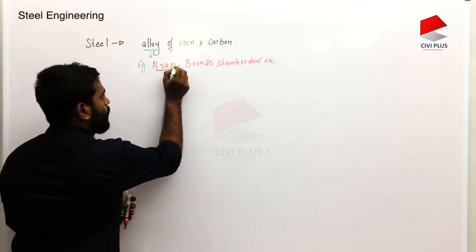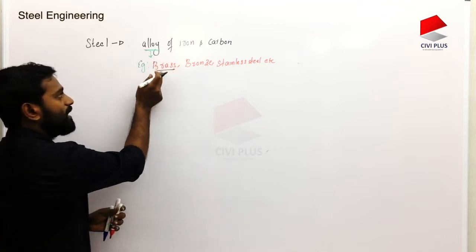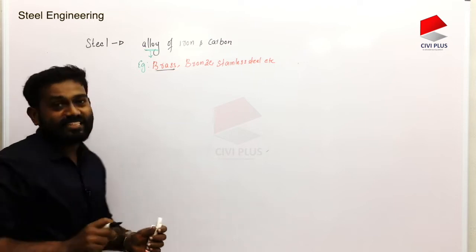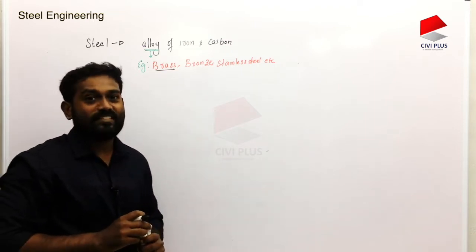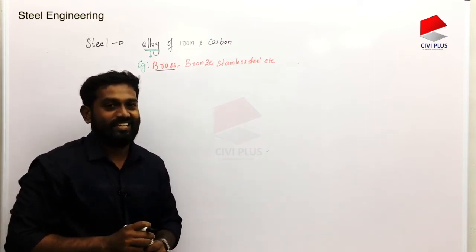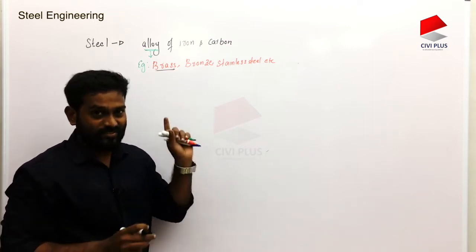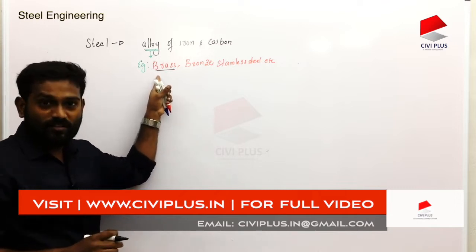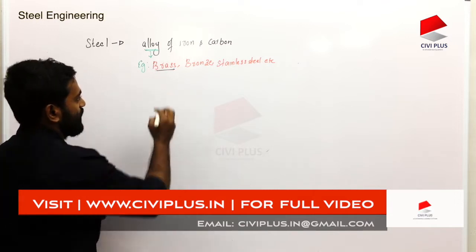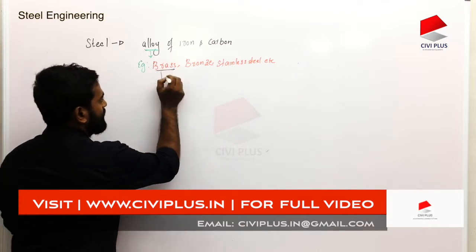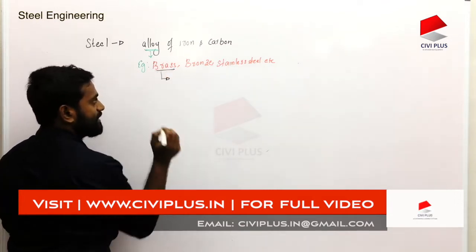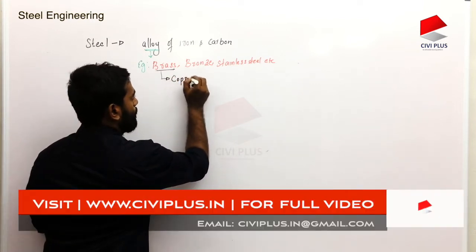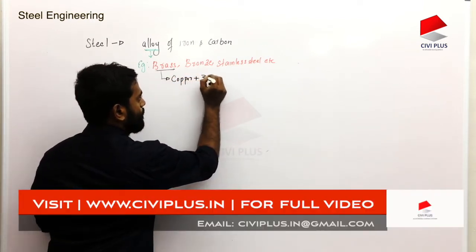When the brass comes in, it comes in an alloy. What do you do when the brass comes in? It comes in a lot of brass. What do you do when the brass comes in? Copper, plus zinc.